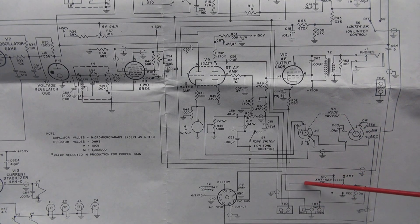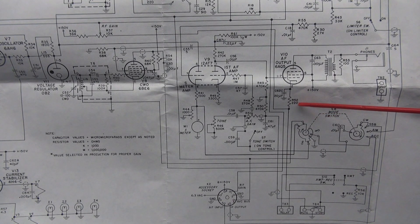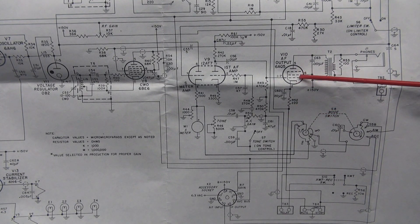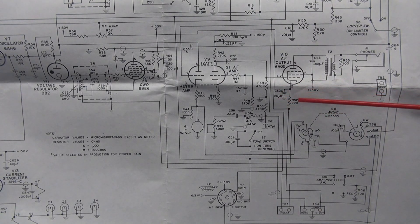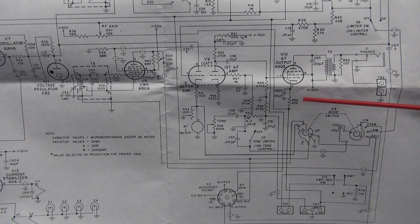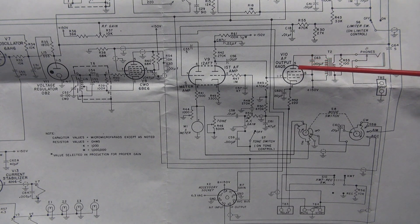Then you follow this line up, and it goes to the cathode resistor to the 6AQ5 output tube, and there's a cap here, strapped to ground. So R52 is actually your bias resistor setting the current for class A operation through V10.